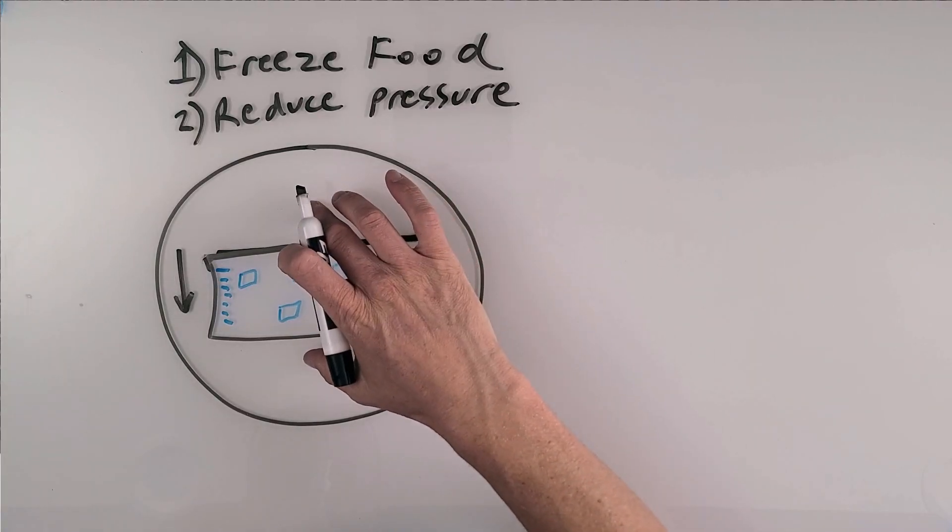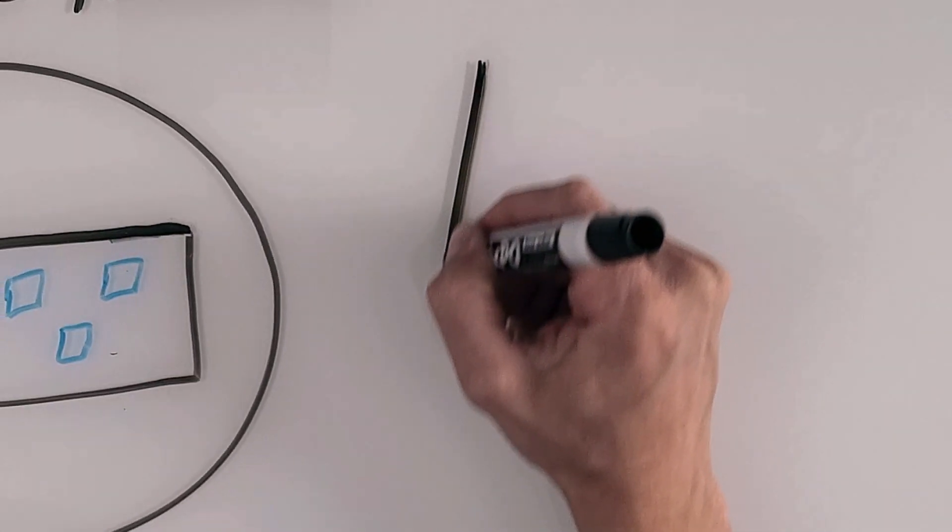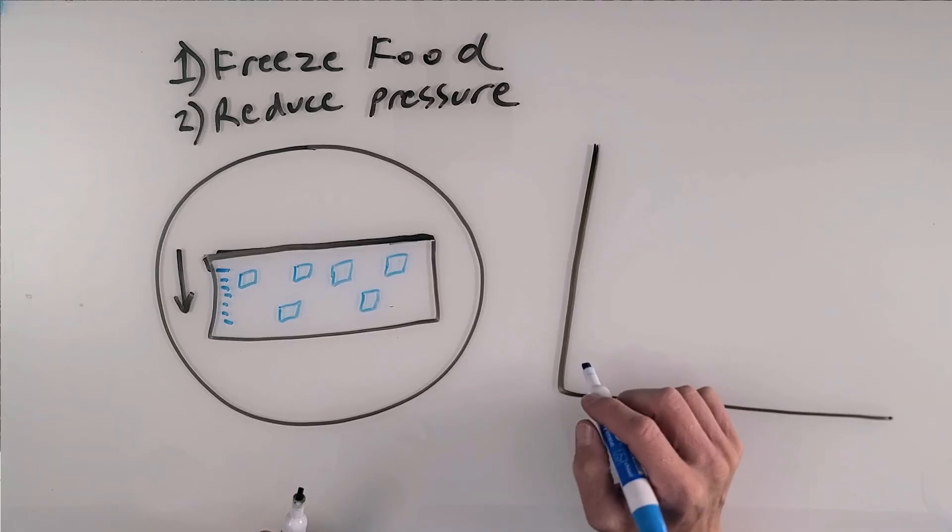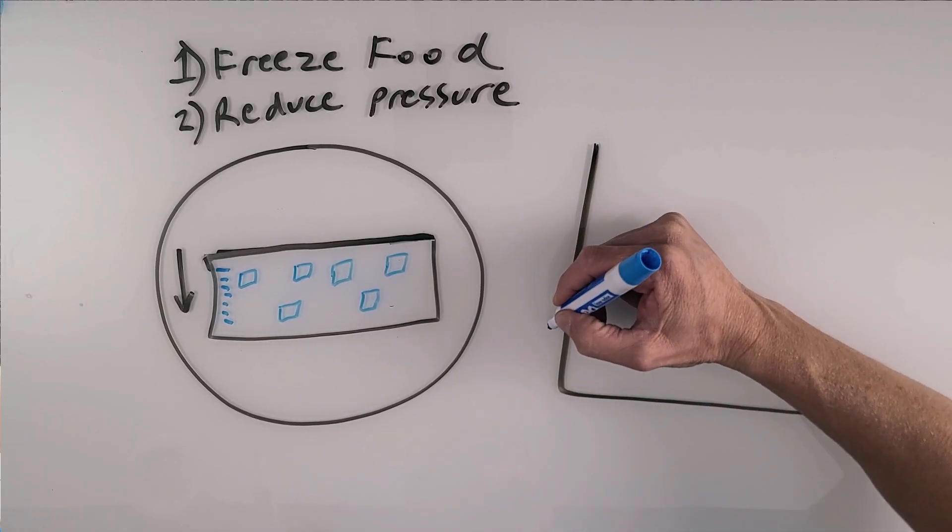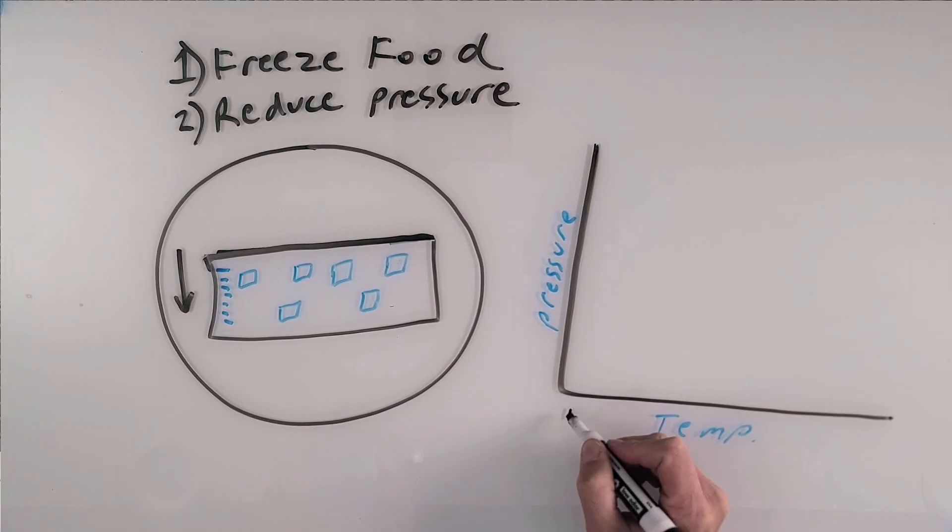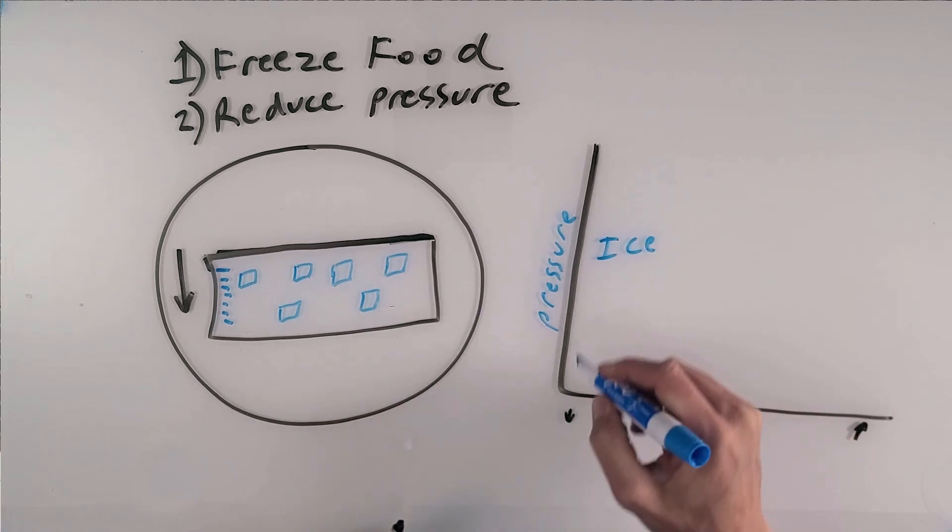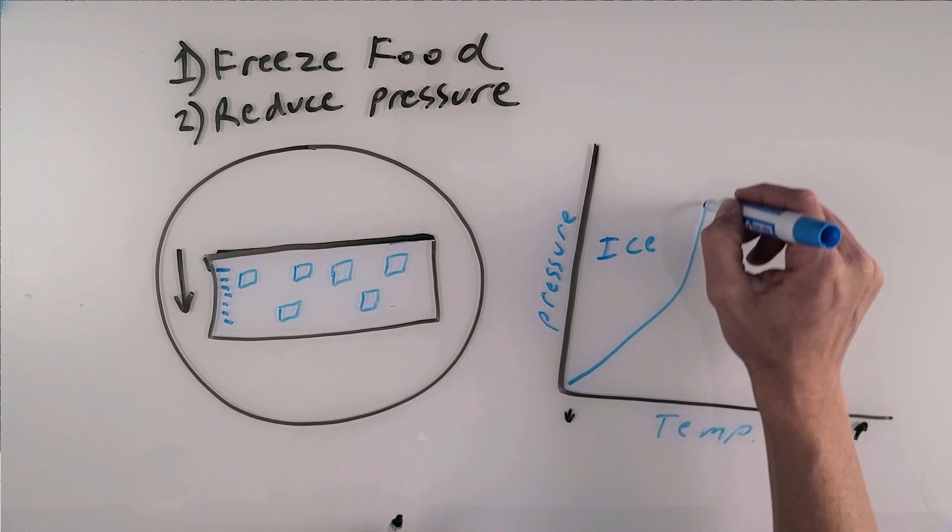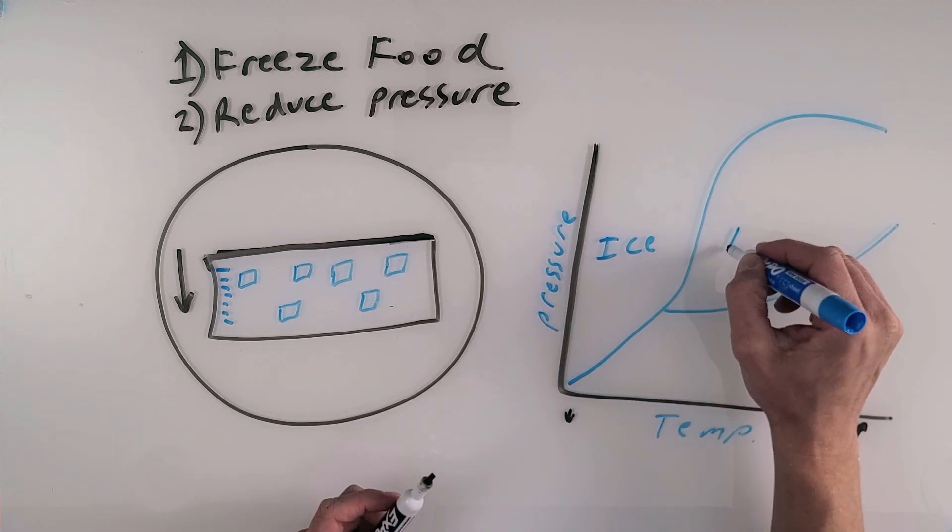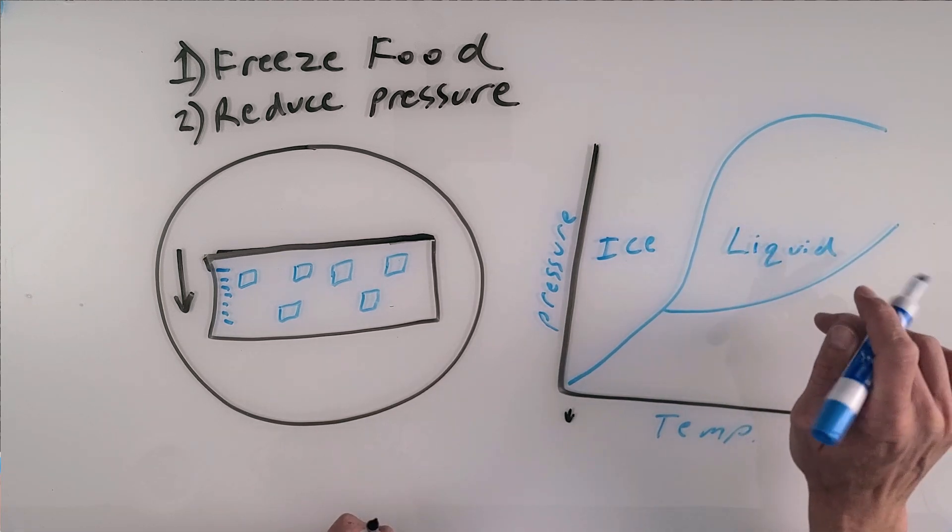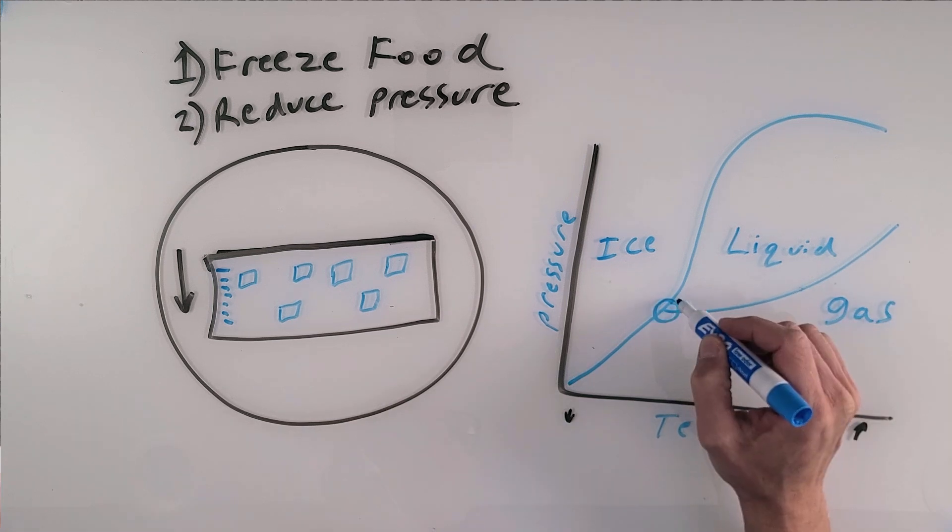So to explain this a little bit better, I'm going to draw a poor representation of the triple point graph. On this graph, we've got pressure on this side and temperature on this side. We've got lower temperature over here, higher temperature over here. So everything over here is ice. As we reduce the temperature, we're going to turn to ice. Everything in here is liquid. And then everything over here is gas. This is the triple point.